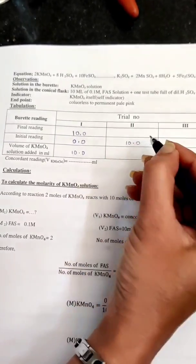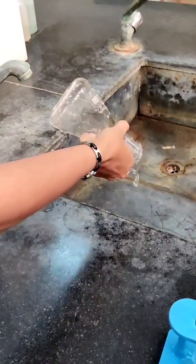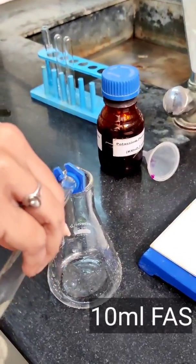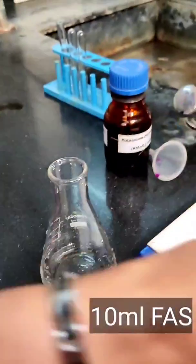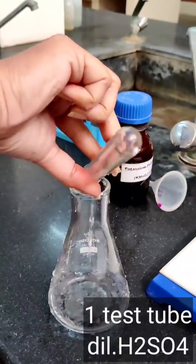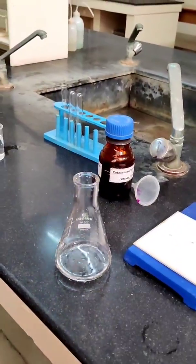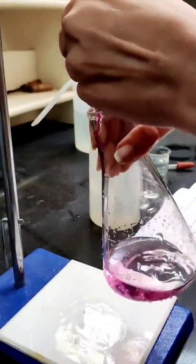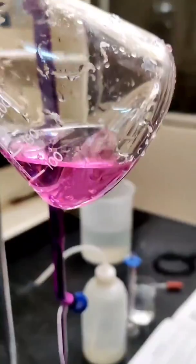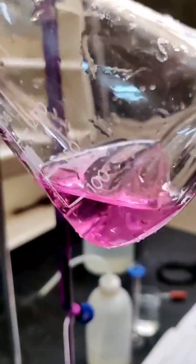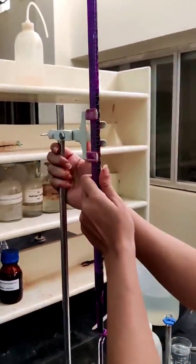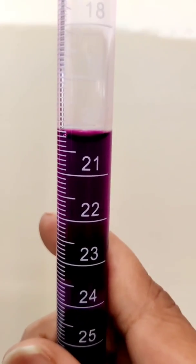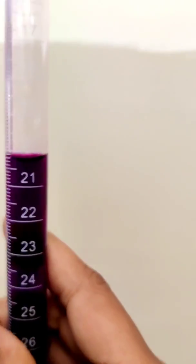Repeat the titration to get concordant values. Wash the conical flask thoroughly. Repeat the titration. This is my second reading of the trial. Note down the reading.